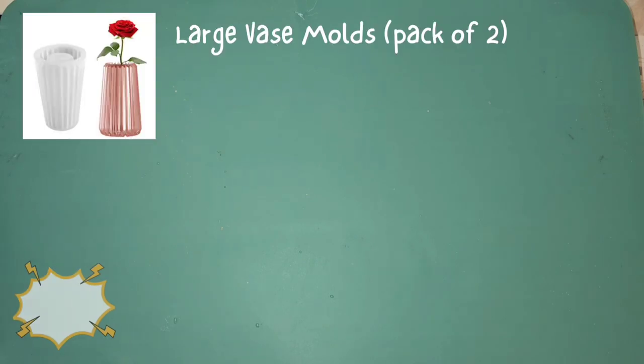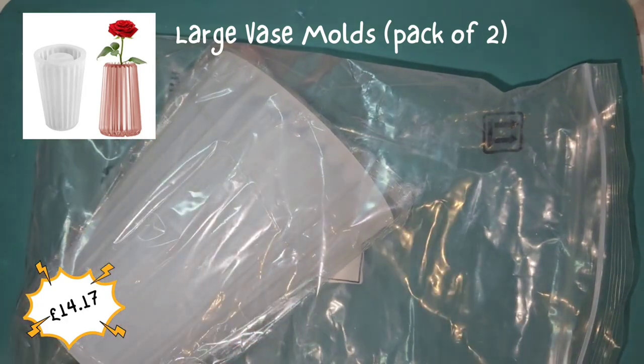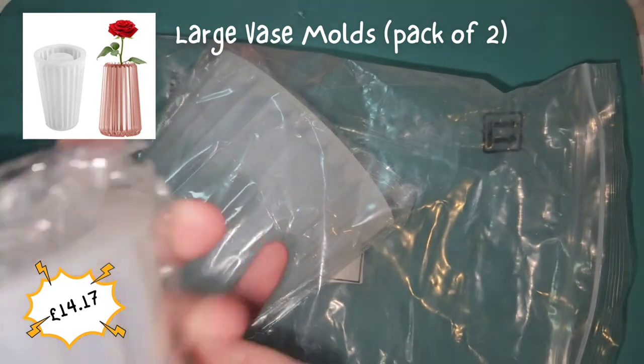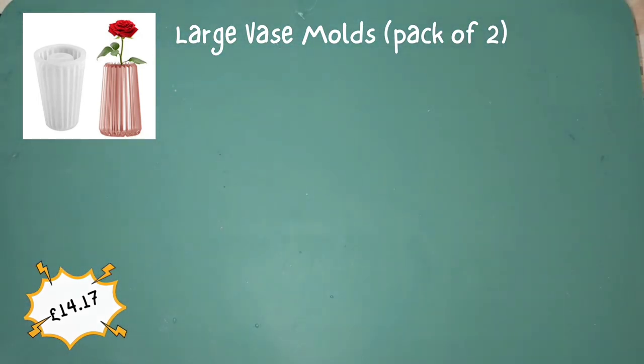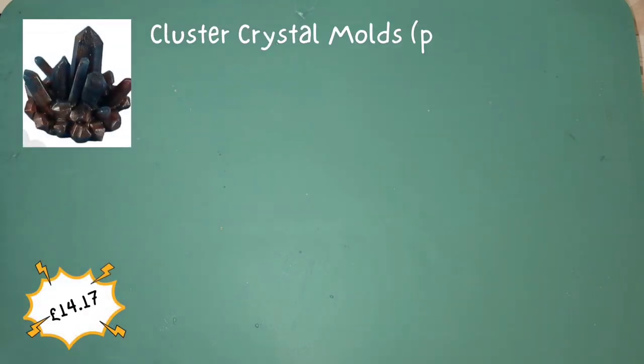The second package is vases, set of two. A lot of their resin molds come in bulk. You don't have to buy everything bulk, you can buy a singular item, but I went for the bulk one because it's great value for money.